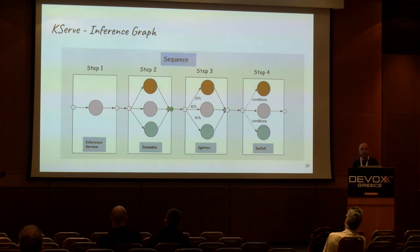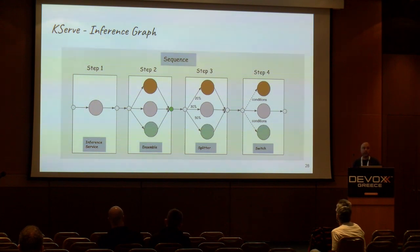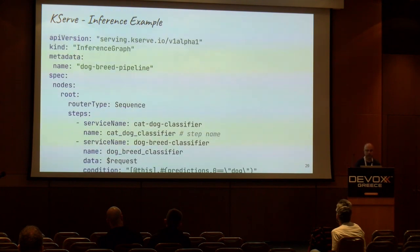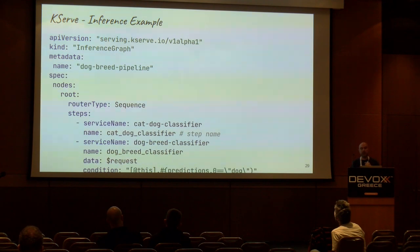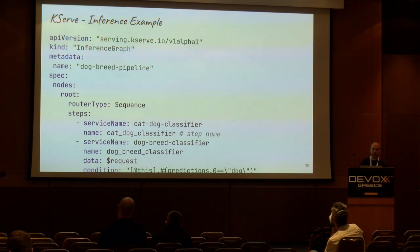KServe offers more complex capabilities, like inference graphs, where you can have multiple model predictions and decide which one to choose — in parallel, splitting traffic, or making predictions based on conditions. Here is an example with two predictions happening — two models delivering two predictions. The second one happens based on some conditions: the first service predicts the animal type, then if it is a dog, the output request is fed to the next model, and that model decides about the dog breed. This provides a number of different options for building prediction graphs.